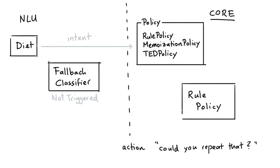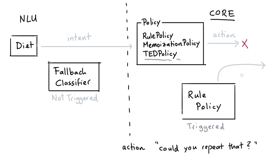The same rule policy can also be configured to handle the fallback mechanism on the core side of the pipeline. If we get a normal intent out of the NLU pipeline where the fallback classifier is not triggered, we can still be in a situation where TED is making the decision on what next action to take — and here too, it can make a prediction for an action that doesn't have a high enough confidence. If that's the case, the rule policy can be configured to trigger a fallback, overriding that prediction and specifying an action: asking the user to rephrase or repeat the question using different words.